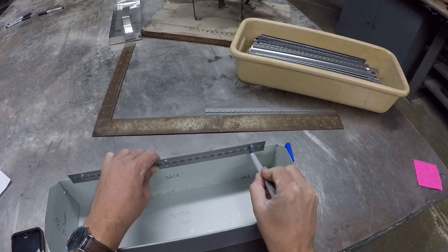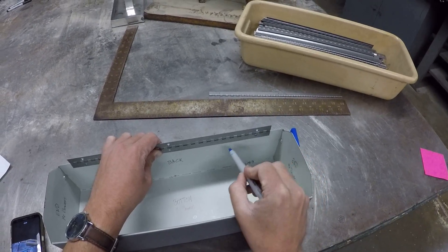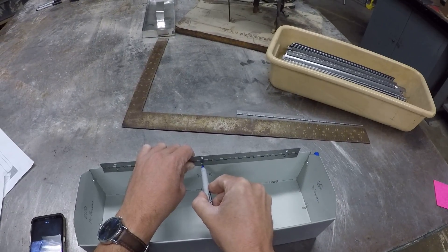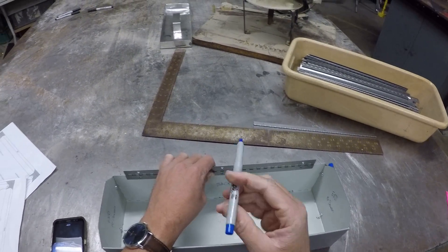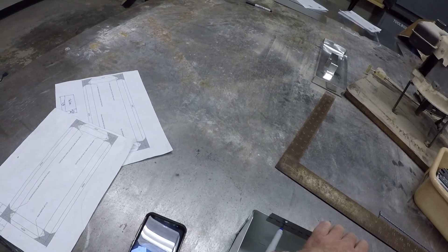So taking my Sharpie or my pencil, I'm going to trace that circle. I'm going to trace that circle and then come over to this one.